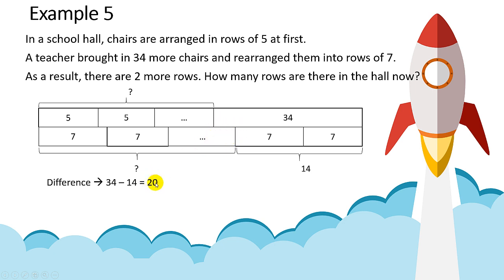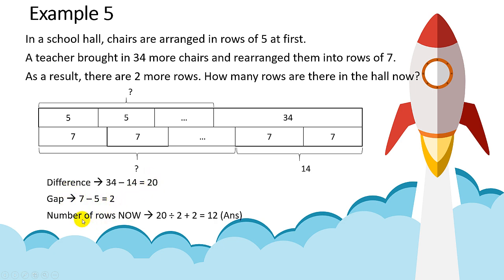After finding the difference, you need to find the gap. The gap will be 7 minus 5, which is 2. Now you can apply the gap and difference concept: take the difference divided by the gap to get the number of rows at the question mark.